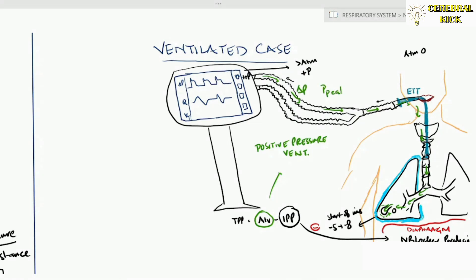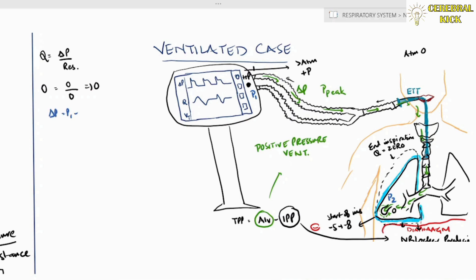When flow is generated through the breathing circuit, ETT, and airways, it tries to overcome resistance — this is called the peak pressure. Until inspiration arrests, there is no flow, and where there is no flow there is no pressure gradient. This is the basis of calculating alveolar pressure: at that no-flow point, the alveolar pressure equals the pressure registered on the ventilator, called the plateau pressure.